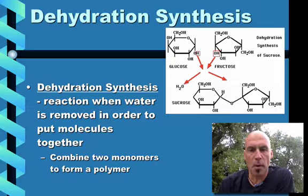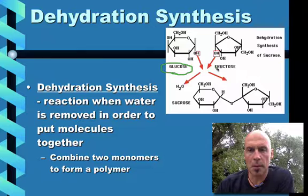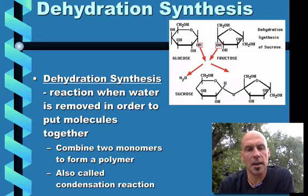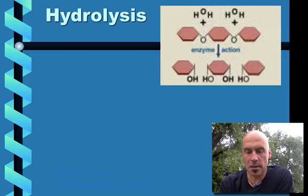So these combine two monomers to form a polymer. Remember mono is one, polymer is many. So again, so we've got monomer, monomer, and this leads to polymer. Alright, so this is also called a condensation reaction.